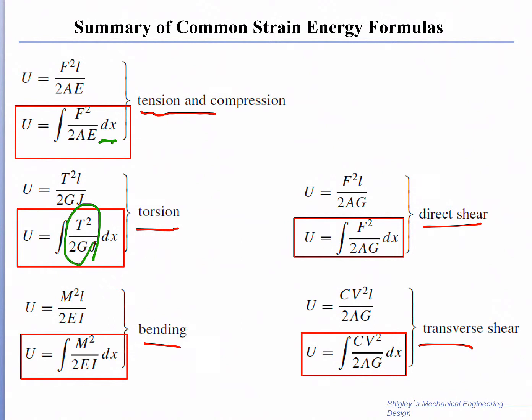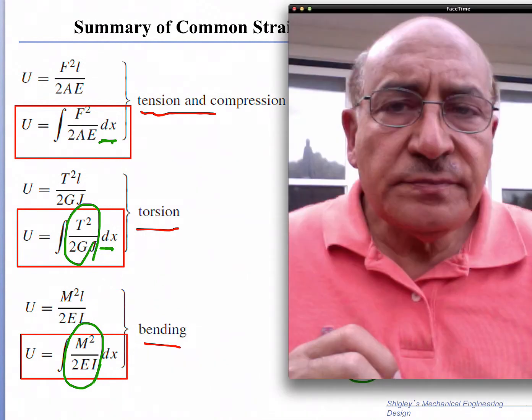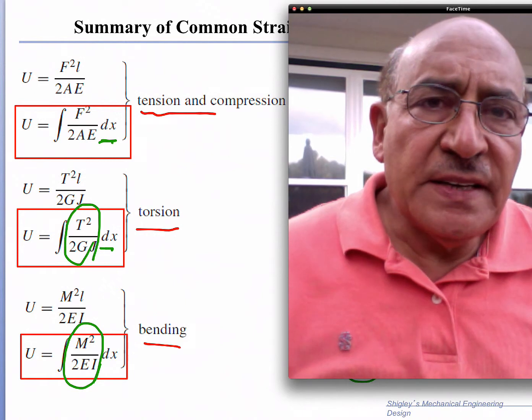For torsion, the energy stored per unit length is T² over 2GJ, and when integrated over the length we get the total energy stored in torsion. In bending it's M² over 2EI. In direct shear it is F² over 2AG, and in transverse shear it is the same as direct shear except there's a shape factor C that depends on the cross section.